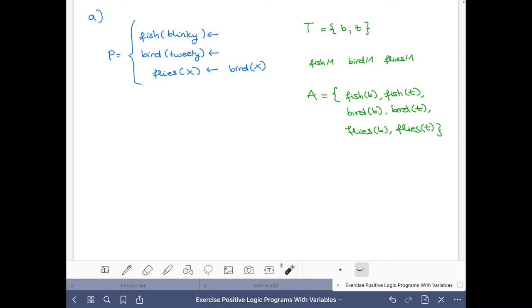And now we have to build the ground instantiation of this program P. The ground instantiation is just the union of the ground instantiation of each rule. So for the first two, it's trivial because they have no variables, they are just facts. So then the ground instantiation is just themselves without changing anything.